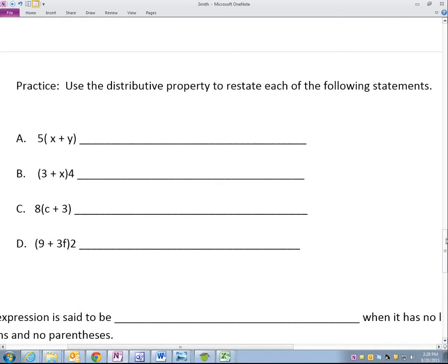Use the distributive property to restate each of the following statements. So we are going to distribute these guys through. We're going to distribute this five all the way through. It's going to be five X plus five Y. And those are not like terms, so we can't make it simplified.